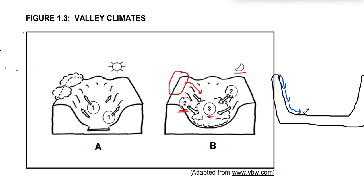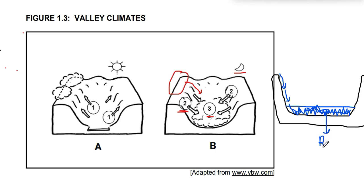The katabatic winds moving downwards cause cold, dry conditions on the valley floor — that is one mark. On the valley floor there will be frost pockets, radiation fog, or mist forming. You have to illustrate this in your diagram, showing that this might be frost pockets or mist or radiation fog. Mention radiation fog clearly in your diagram.